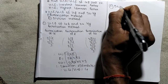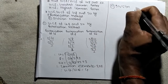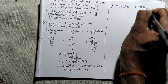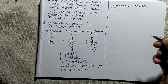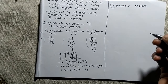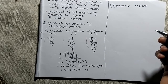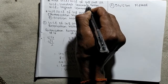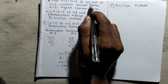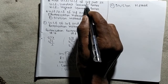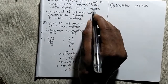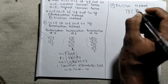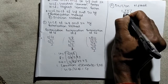Our second method is by division method. Let's find out GCF or HCF by division method. While finding GCF or HCF by division method, we have to divide the greater number by the lesser number. Let's take the numbers 4 and 8. In this case, 8 is the greater number and 4 is the lesser number, so we divide 8 by 4.